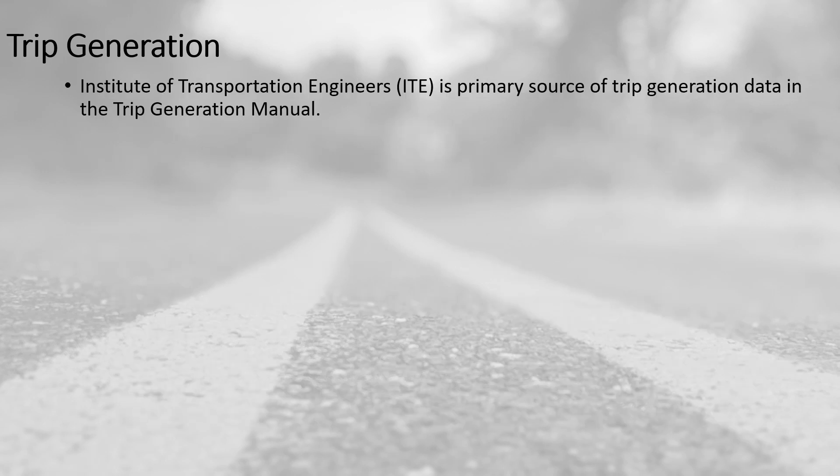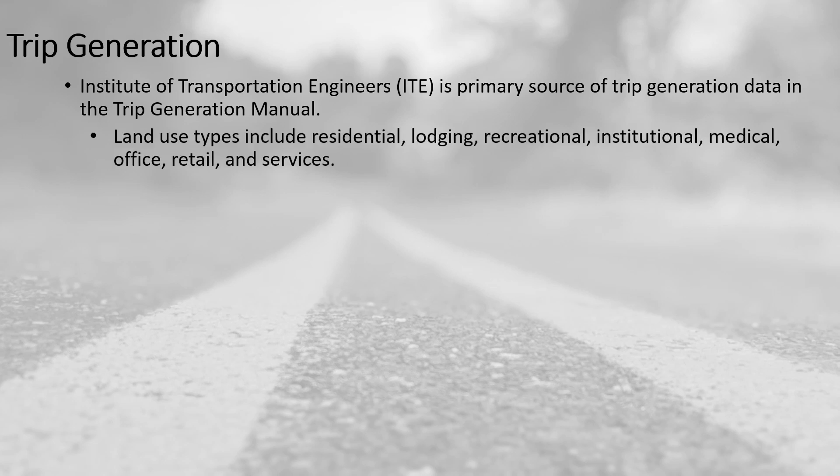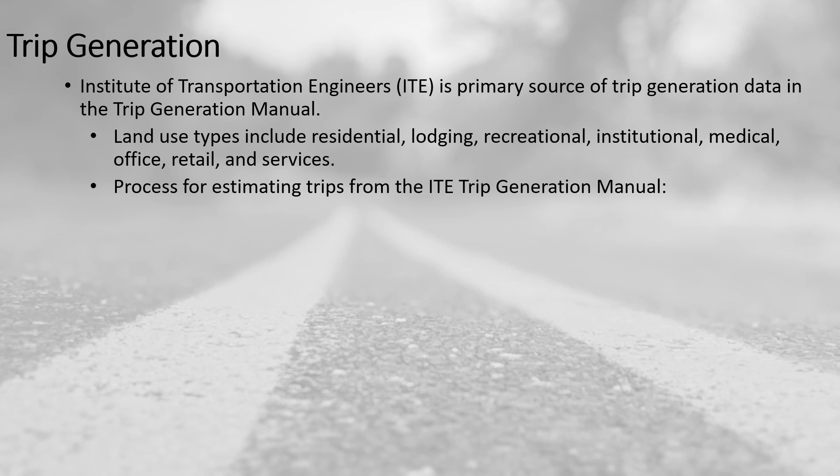ITE, the Institute of Transportation Engineers, is the primary source of trip generation data, provided in the Trip Generation Manual. There are many land use types, with broad categories including residential, lodging, recreational, institutional, medical, office, retail, and services. Within those broad categories, there are specific types of land uses, and you'll want to be specific when selecting the appropriate one for your analysis of a development.